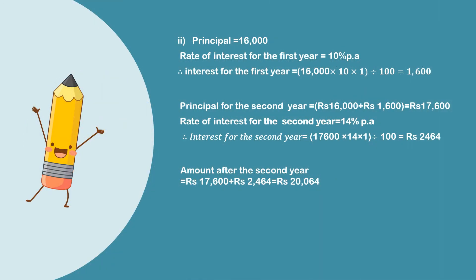For the second part, the principal is 16,000. The rate of interest for the first year is 10%. Interest for the first year using PRT ÷ 100 gives us 1,600. The principal for the second year equals the first year amount: 16,000 plus 1,600, which is equal to 17,600.